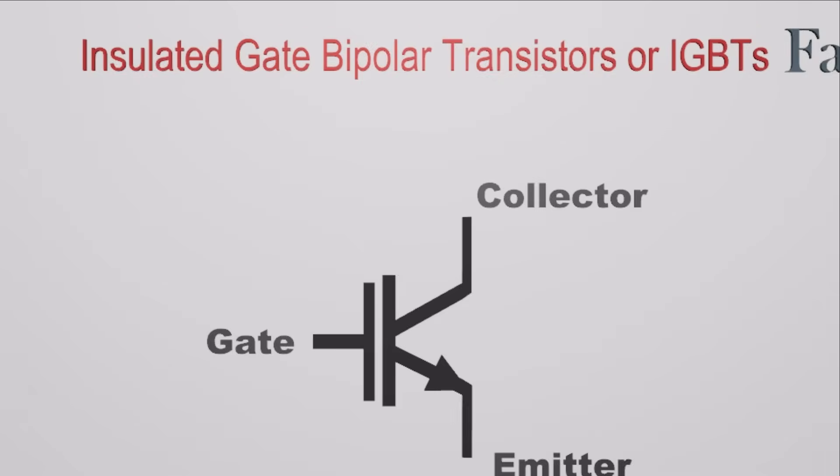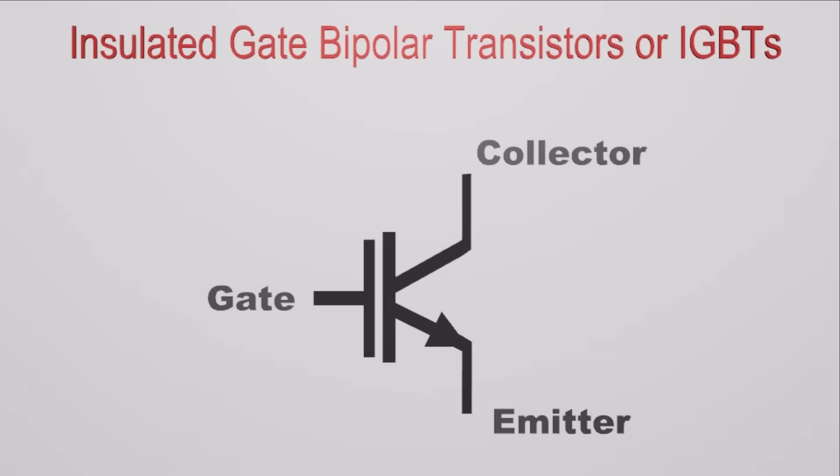An IGBT is a three-terminal power semiconductor device primarily used as an electronic switch. IGBT can be switched on and off by activating and deactivating the gate.